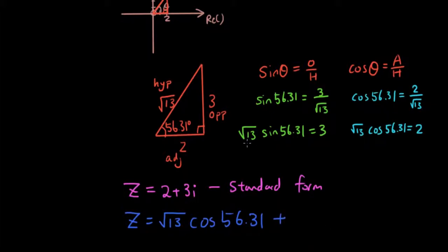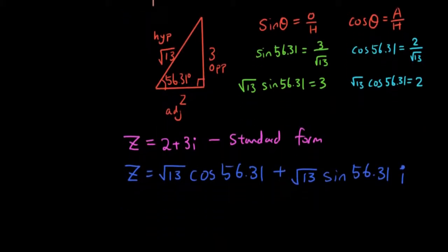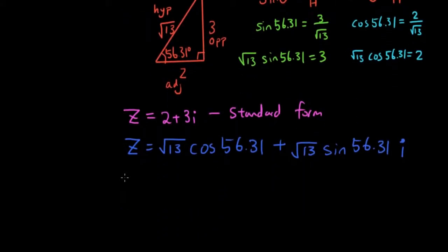And I have 3, which is square root of 13 sin 56.31, and I have an i here at the end. I know this is all very confusing at the moment, but you will see an easier way of doing all this soon.